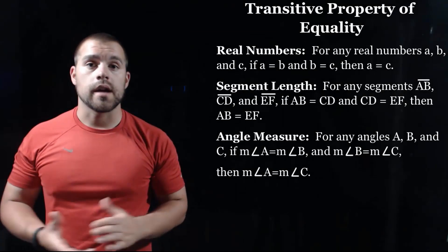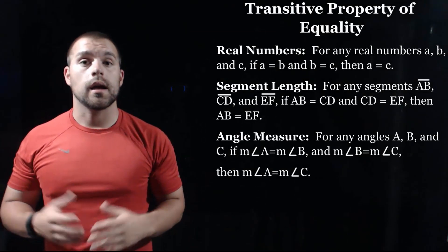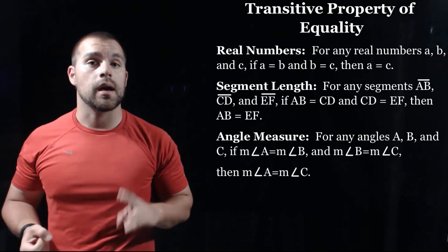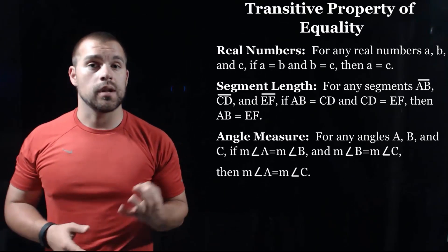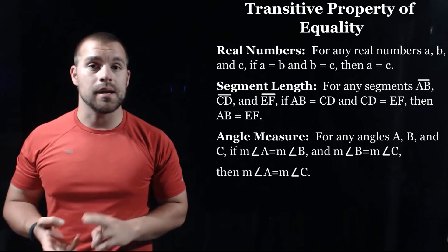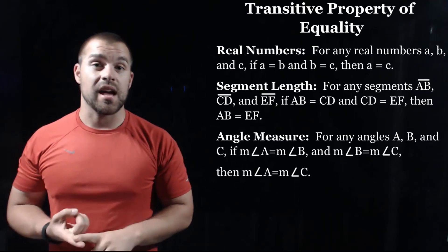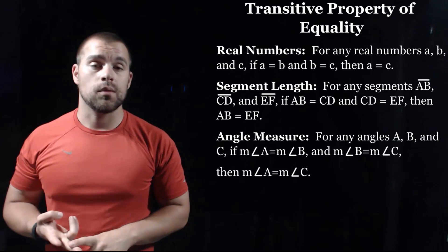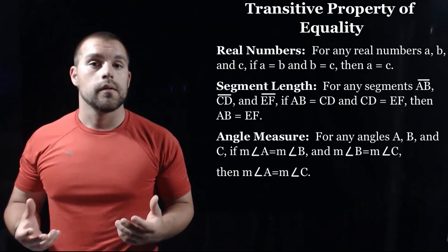Our last new property is called the transitive property. Again, there's a real number case, a segment case, and an angle case. For the real number case, we're dealing with three real numbers A, B, and C. The transitive property says if A equals B and B equals C, then A has to equal C as well.